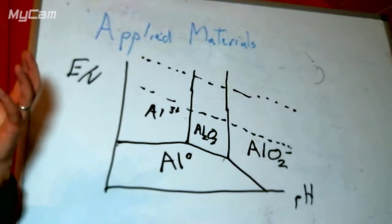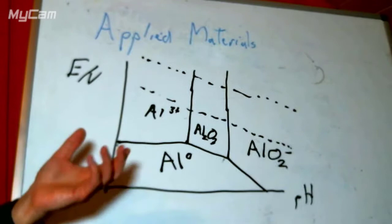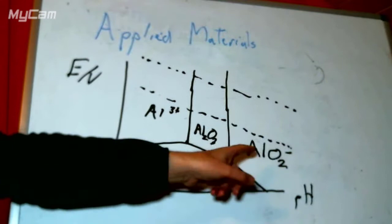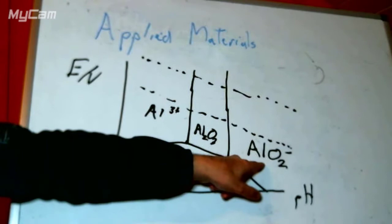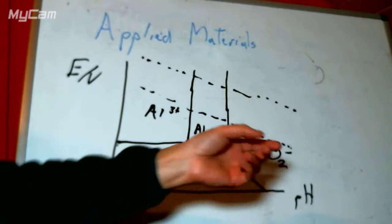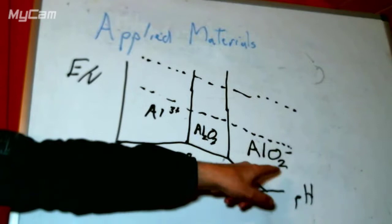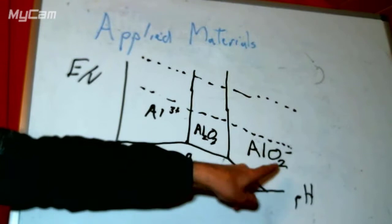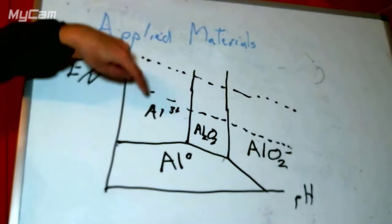Remember, it's a thermodynamic diagram — so this is predicting that all of our aluminium will turn into aluminium trioxide, Al₂O₃. If we make it even more basic, we end up with a hydroxy group, effectively the aluminate anion. We've reacted with Al₂O₃, taken two hydroxide anions, made water, and made this aluminate anion, which is soluble in water. That's why in my dishwasher, aluminium is really unstable.